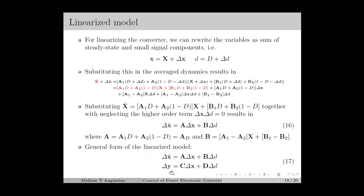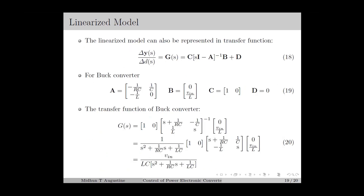The matrices A and B are constant matrices for a particular steady state operating point X and D. The general form of the linearized model is given as equation number 17, where delta_y is the small signal output vector. D is usually 0, so delta_y equals C·delta_x. We can also represent the linearized model as a transfer function. From basic control theory, the formula for obtaining the transfer function from the state space model is given as equation number 18, where G(s) is the ratio of the Laplace transform of the output to the input, and s is the complex frequency.